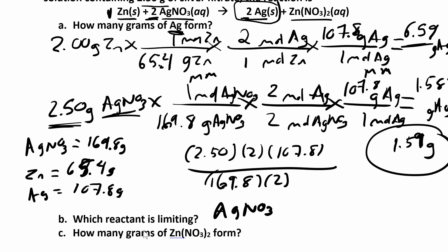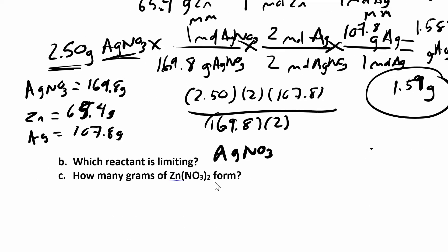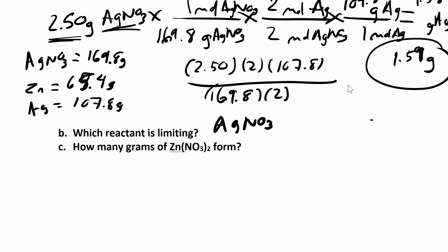So in Part C, they just want to know how many grams of zinc nitrate are going to form. We can start with the amount of silver nitrate and compare that directly to the grams of zinc nitrate. So we're going to set it up — basically it's going to look the same, except the last part changes: instead of going to silver, you're going to go to zinc nitrate. So we need another molar mass. Let's set it up and then figure out what else we need to calculate.